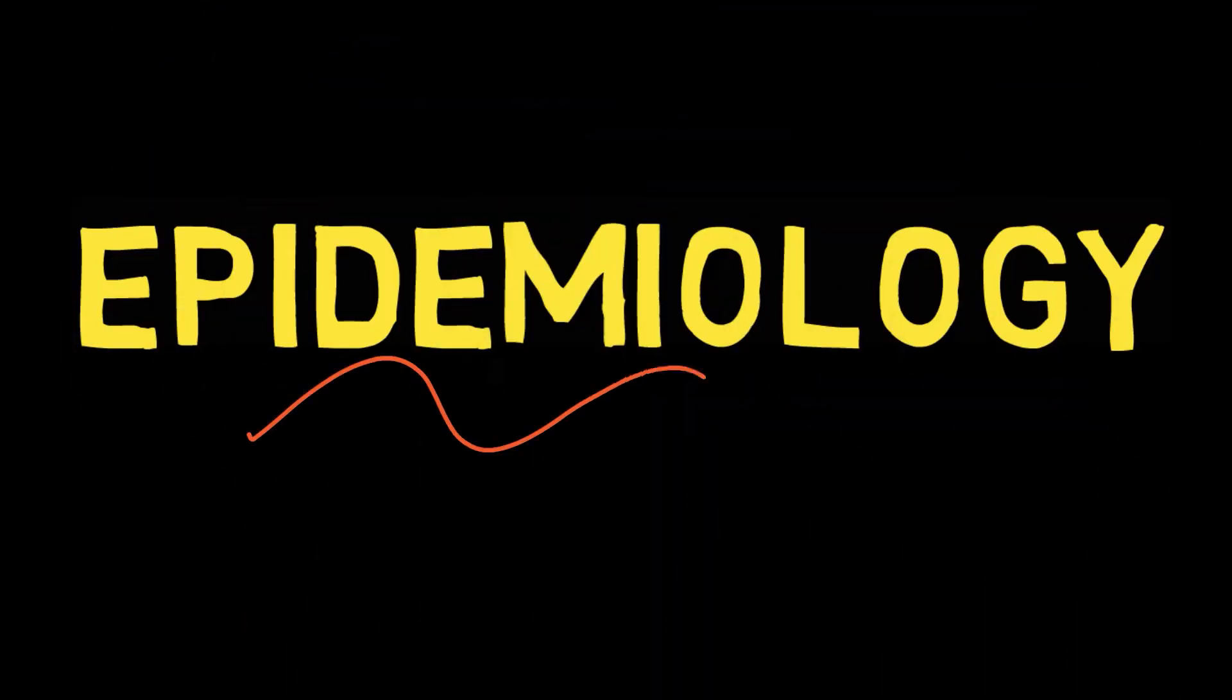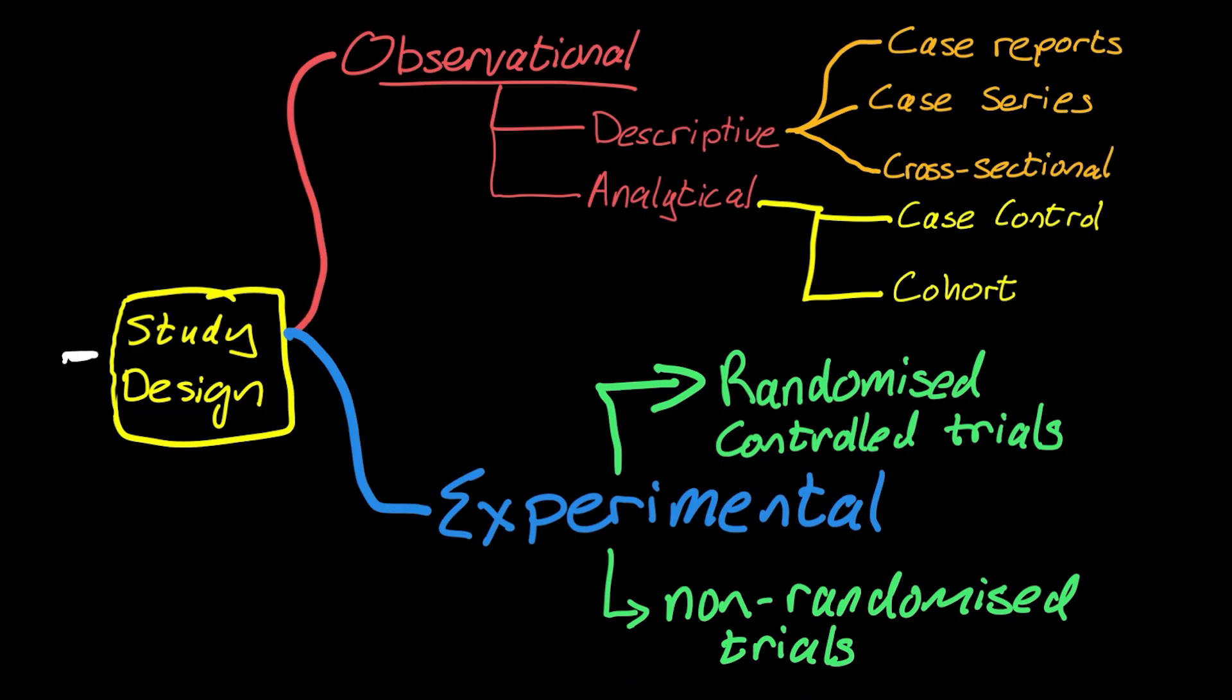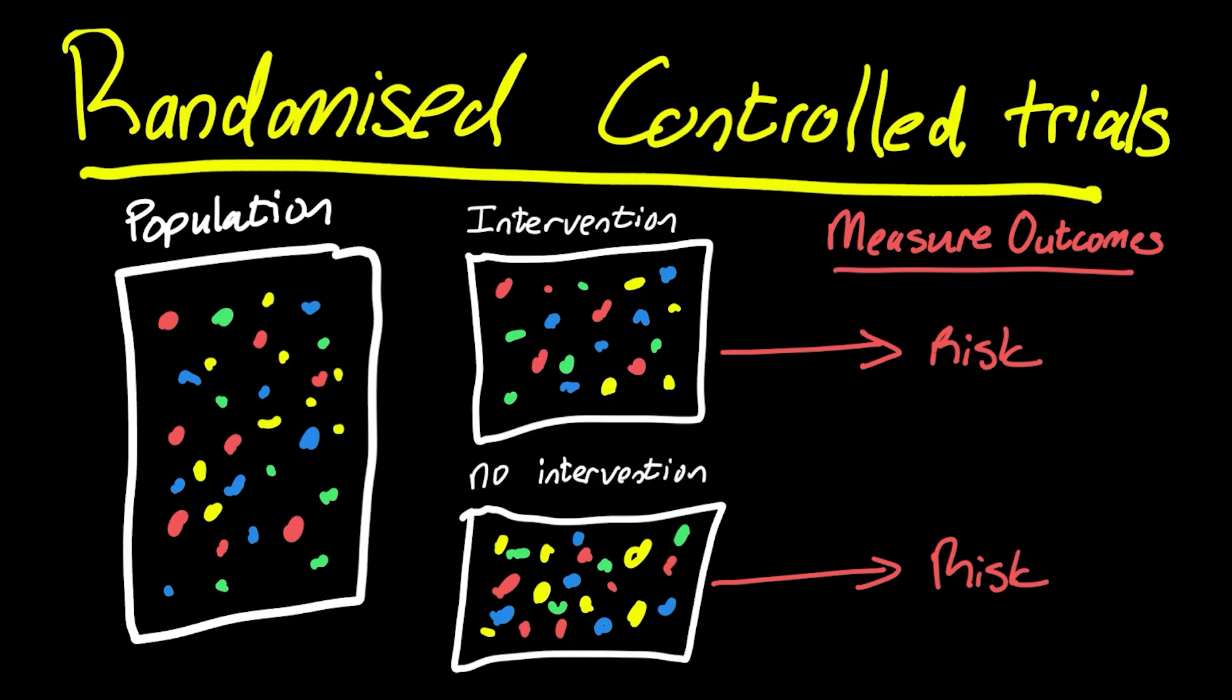Welcome back. We're talking about epidemiology, and this is video four in a series. At this point, we're talking about study design. We've talked about the fact that epidemiological studies can be observational or experimental. Now we're onto the experimental ones. This is where we really believe we can get a stronger sense of the evidence of causation between an exposure and an outcome.